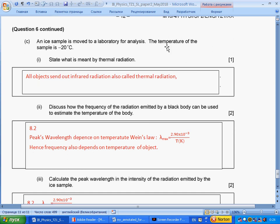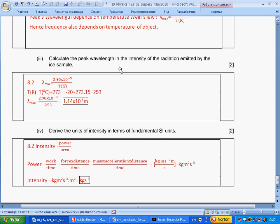An ice sample is moved to laboratory for analysis. The temperature of the sample is minus 20°C. State what is meant by thermal radiation. All objects send out infrared radiation, which is also called thermal radiation. Discuss how the frequency of the radiation emitted by a black body can be used to estimate the temperature of the body. Section 8.2: peak wavelength depends on temperature - it is Wien's law. Hence, frequency also depends on temperature of the object, because we have wave equation. Calculate the peak wavelength in the intensity of radiation emitted by the ice sample. We use this formula. We calculate minus 20 degrees Celsius, turn into Kelvin temperature, and we get this wavelength with three significant figures.